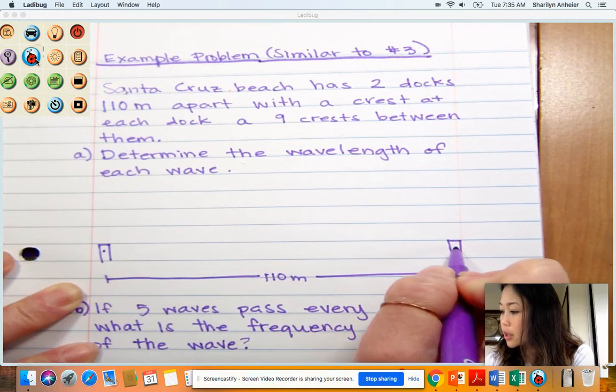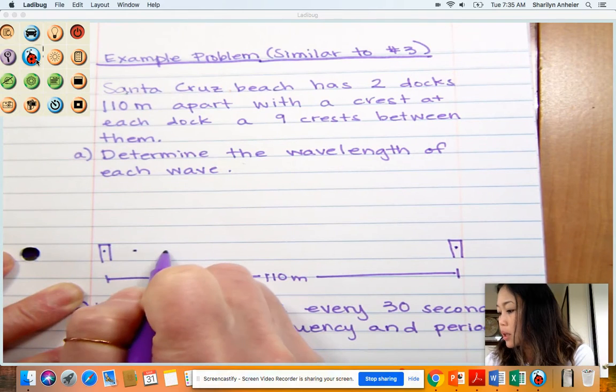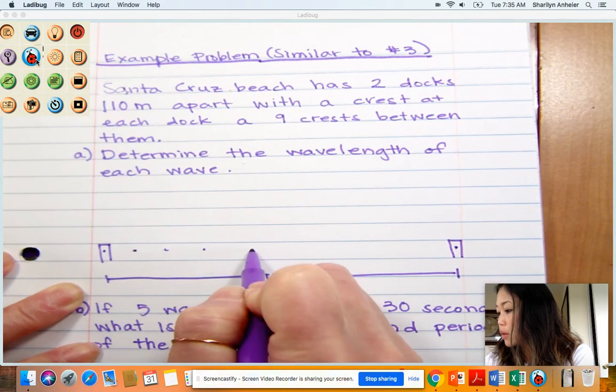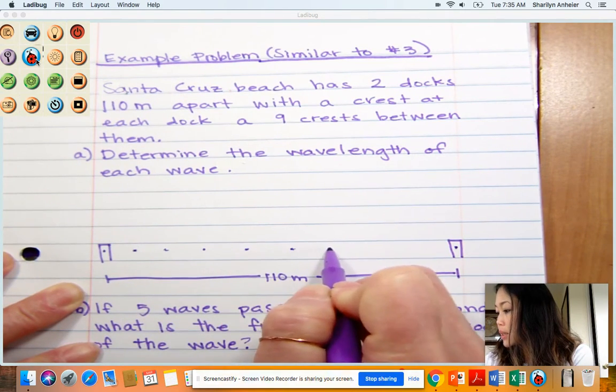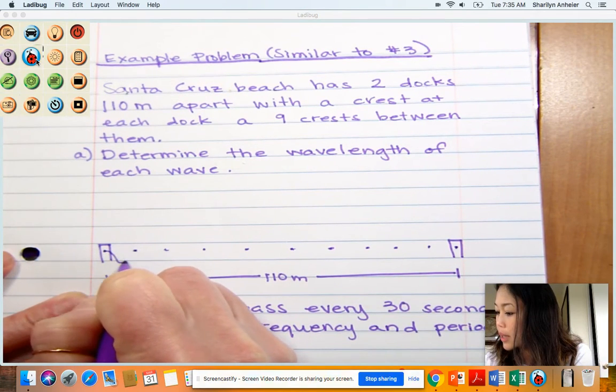Let's have a crest here, crest here, and then I'm going to evenly draw nine crests. Imagine that they are even: 1, 2, 3, 4, 5, 6, 7, 8, 9. So this is what my wave looks like.